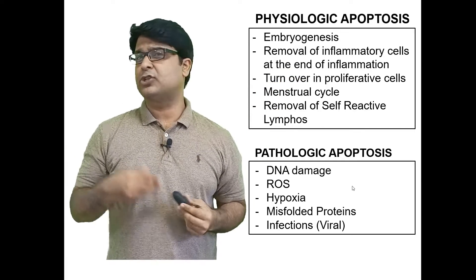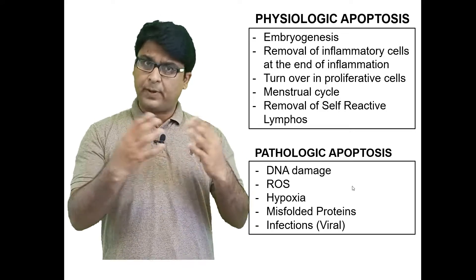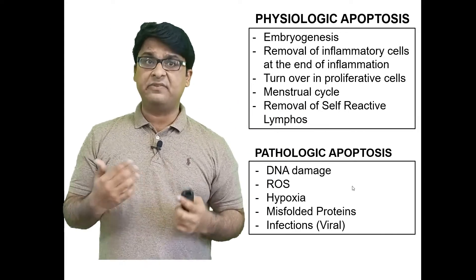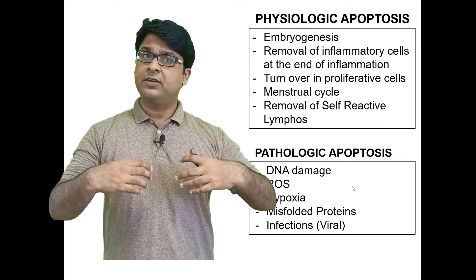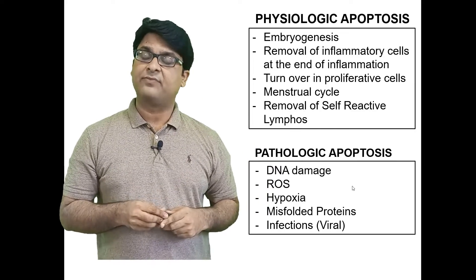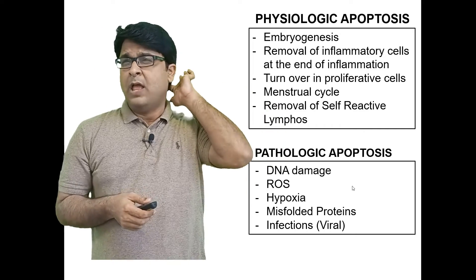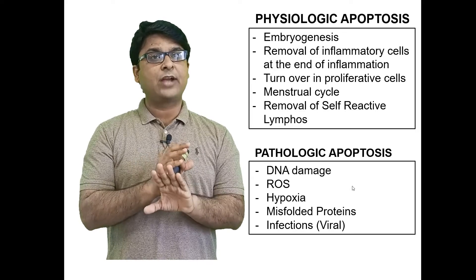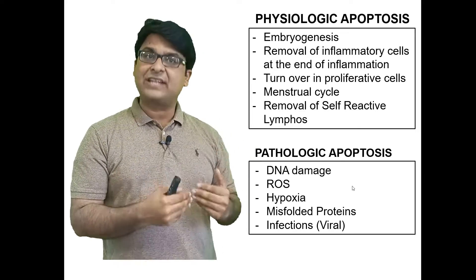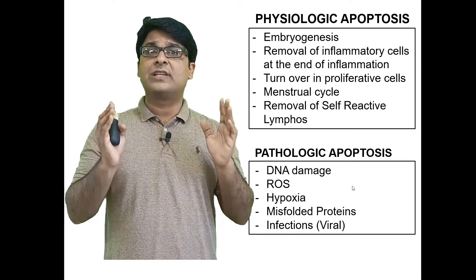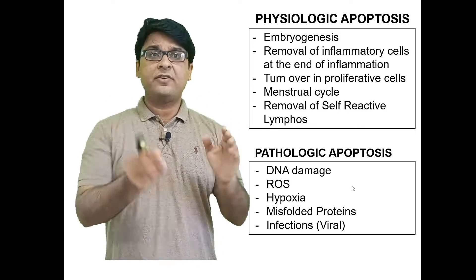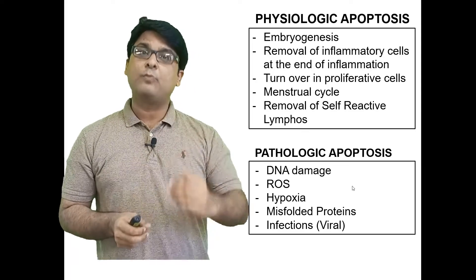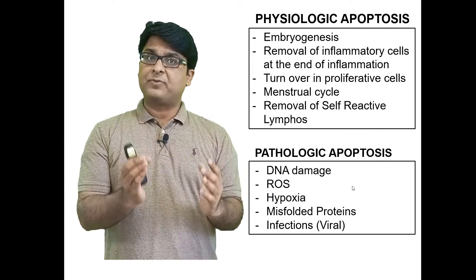Also physiological is the turnover of proliferative cells — after a certain time period they vanish using apoptosis. The menstrual cycle is another example: every month in females, endometrial cells fall off via apoptosis and then proliferate again. And removal of self-reactive lymphocytes — your body orders those lymphocytes that recognize self-antigens to die, and that order is the apoptotic pathway.